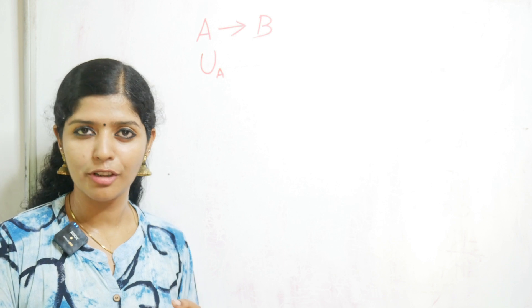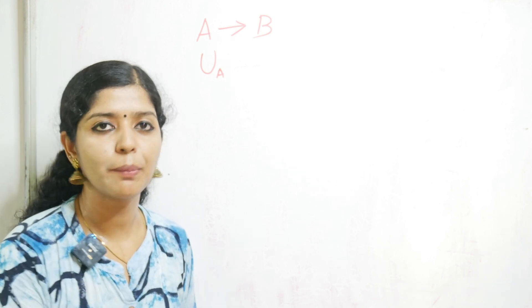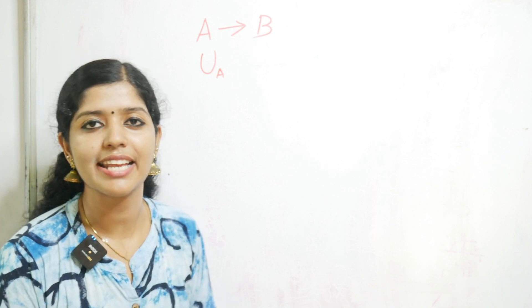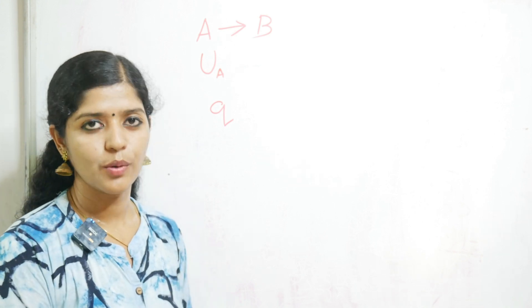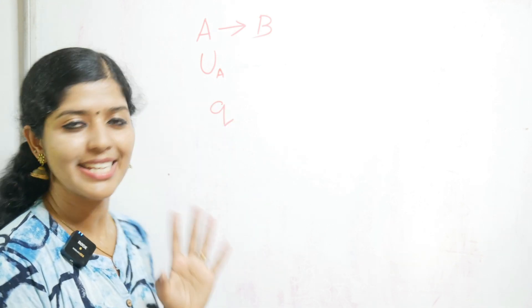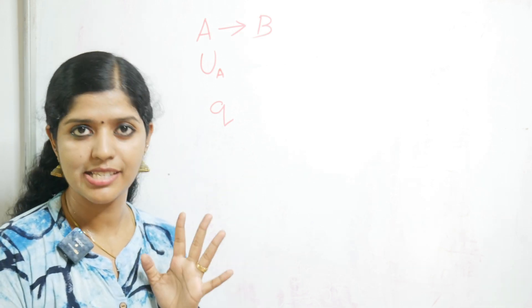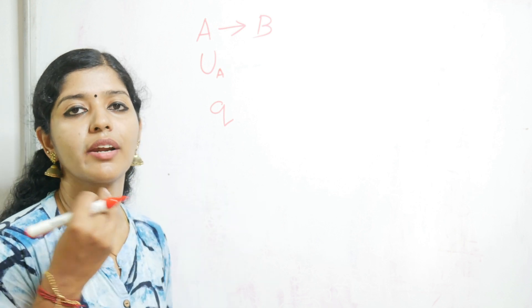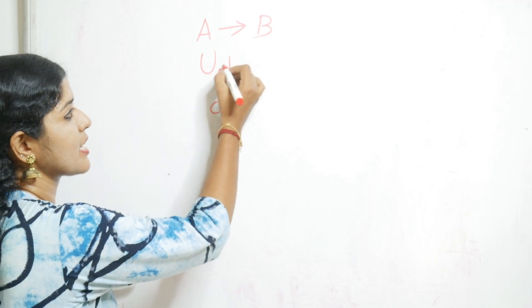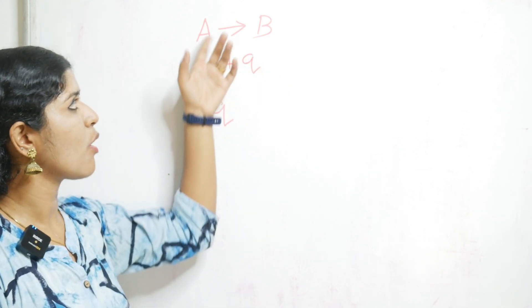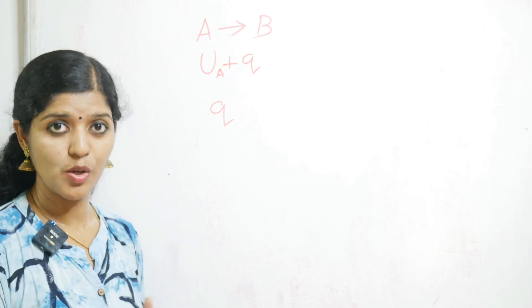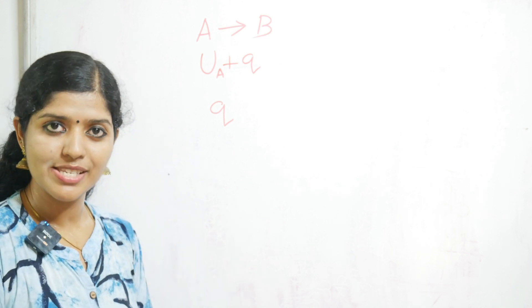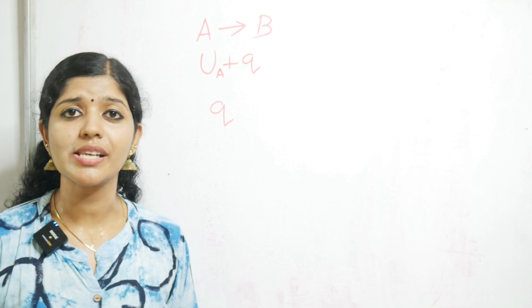A is converted into B. For A to be converted into B, it needs to absorb some amount of energy from the surroundings — that is called heat energy. Heat energy or heat is generally represented using the letter Q. So A will be absorbing some amount of heat Q from the surroundings and then it will be converted into B. Now the total energy of A will be U_A plus Q. U_A was the energy already present inside A; after absorbing Q amount of energy from the surroundings, the total energy of system A will be U_A plus Q.